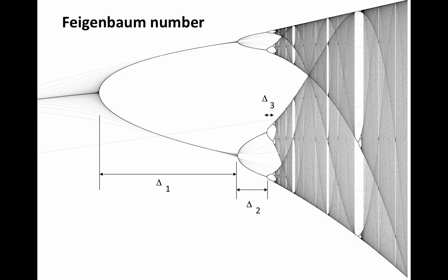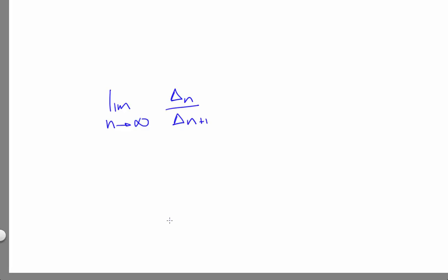That is, the ratio of the width delta 3 to the width delta 2 is about the same size as the ratio of the width delta 2 to delta 1. In the high period limit, that ratio approaches the value of about 4.66. Mitchell Feigenbaum is responsible for the proof about that ratio, and that number bears his name.